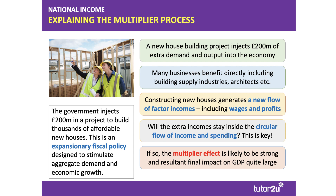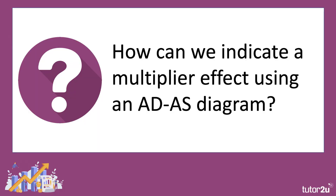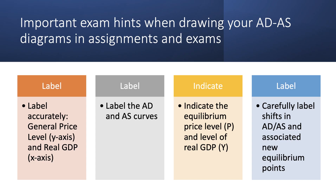To finish, how can we indicate a multiplier effect using an aggregate demand and supply diagram? Some important exam hints: when drawing AD/AS diagrams, remember to label accurately — the general price level goes on the y-axis and real national output or real GDP goes on the x-axis. Don't forget to label aggregate demand and supply curves, indicate equilibrium price level and GDP by drawing to the axes, and carefully label any shifts in AD/AS and associated new equilibrium points.